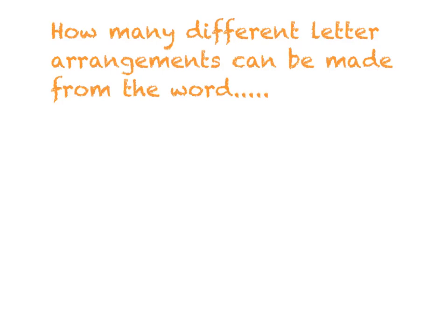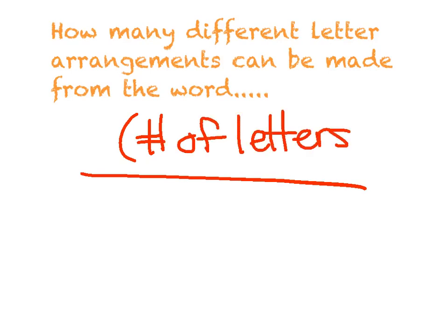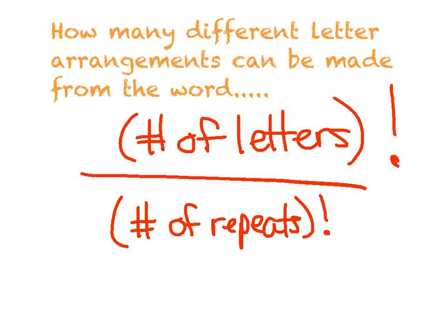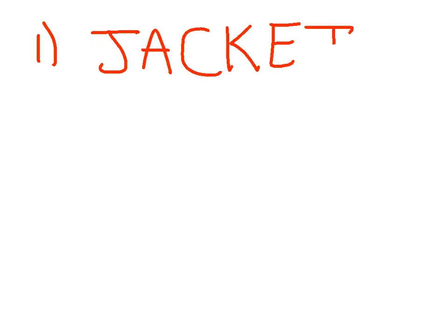Alright, here's our last little section for the night. The next common question is, how many different letter arrangements can be made from the word? And they'll give you a word here. Now, here's the rule we want to use. On top, it's the number of letters factorial divided by the number of repeats factorial. And there might be more than one number that repeats, so you could put it on there again. So let me run through a couple examples for you. Number one. Jacket.